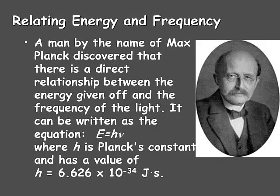Now, as we relate energy with the frequency of light given off, we have to look at a man by the name of Max Planck, because he discovered that there is a direct relationship between the energy given off and the frequency of the light. It can be written as the equation E equals hν, where E is energy, h is Planck's constant and has a value of 6.626 times 10 to the negative 34th joule seconds, and ν represents the frequency.